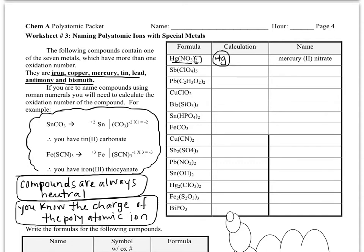NO3 is called nitrate. So here's an NO3, and here's another NO3. And if we look up on our list of polyatomic ions, NO3 has a charge of minus one. So that's got a minus one charge, and so does that.